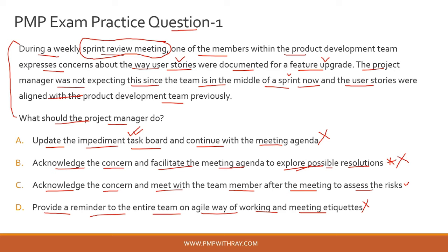Option B: demonstrate servant leadership via facilitation. This is a good option. By facilitating, you can do one-to-ones with stakeholders to understand why they are not turning up to meetings, whether there is a motivational issue, or what problems they are facing. You are actively solving the problem while demonstrating servant leadership. Option B looks like a good option — let's park it for now.